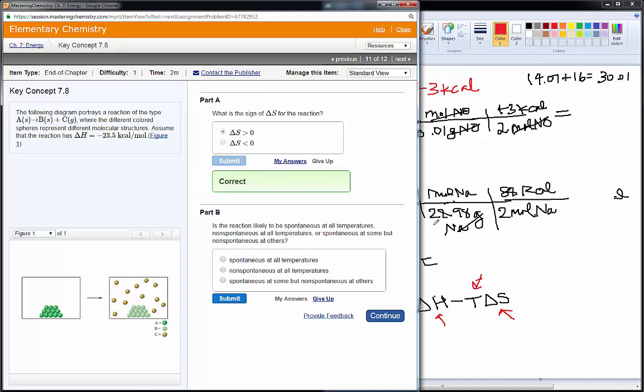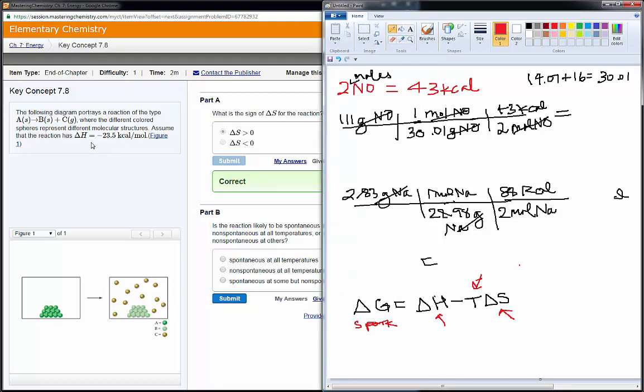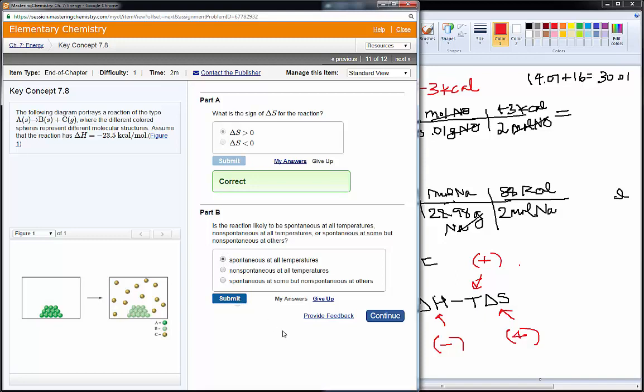Next, is the reaction likely to be spontaneous, non-spontaneous, or what? Well, if we know here, this tells us that the delta H is negative. They said that. And we know here, we just deduce that the delta S is positive. So, since the temperature always has to be positive, since it's always given in Kelvin, positive times a positive is a positive. And if I'm subtracting a positive value, then I'm becoming more negative. If I start with something that's negative and I become more negative, then this will just always be negative. So, that would be spontaneous at all temperatures.